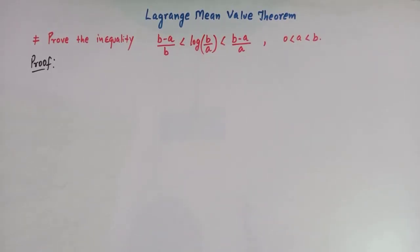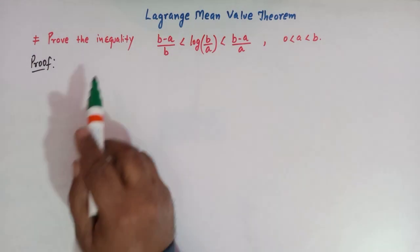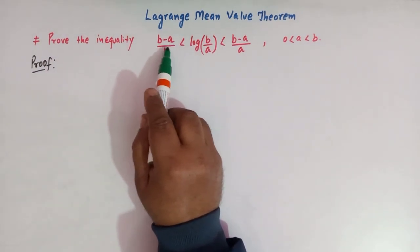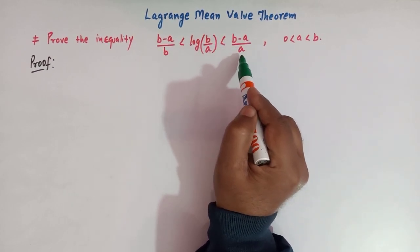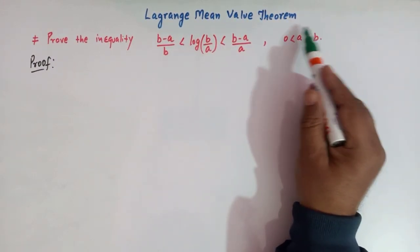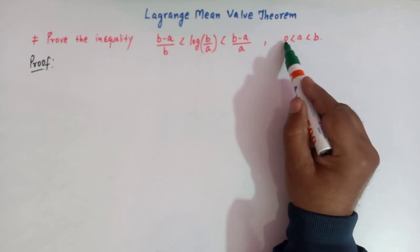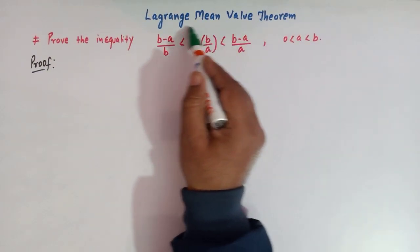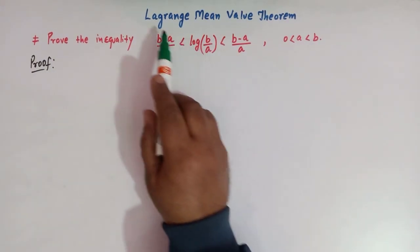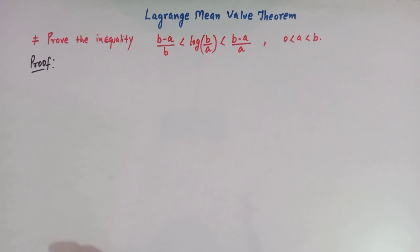Hello viewers. In today's class we are going to discuss yet another important inequality which can be proved using the famous Lagrange's mean value theorem. We are going to prove that (b minus a) over b is less than log of (b over a), and that is less than (b minus a) over a, where a and b are real numbers with both greater than 0 but a is less than b.